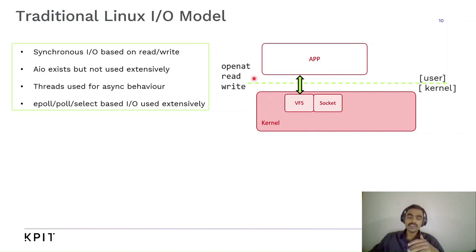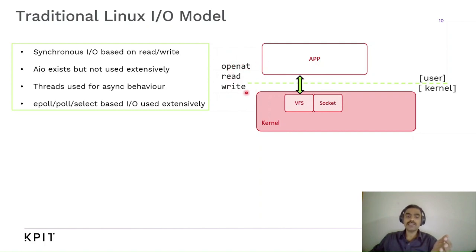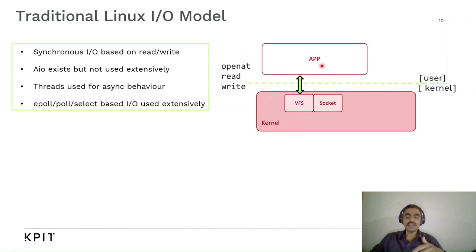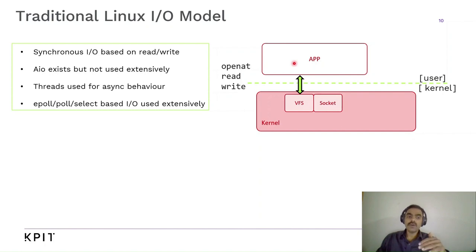Asynchronous IO also exists but is not used extensively apart from the storage world. Threads are used for simulating asynchronous behavior, but the system calls themselves are not really asynchronous. epoll, poll, and select-based IO are also used extensively. The system call performs a context switch into the kernel world, the kernel handles the system call and returns the result to the application, and the application waits in the same thread for the system call to complete. Linux has been having synchronous IO traditionally.